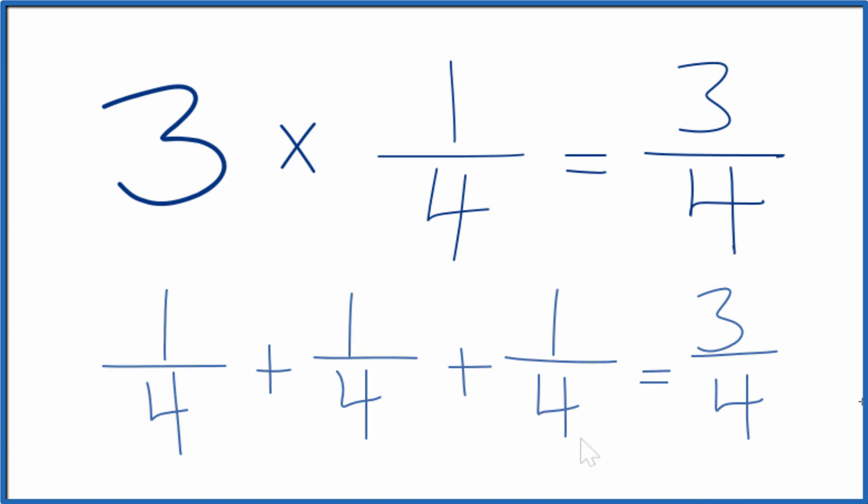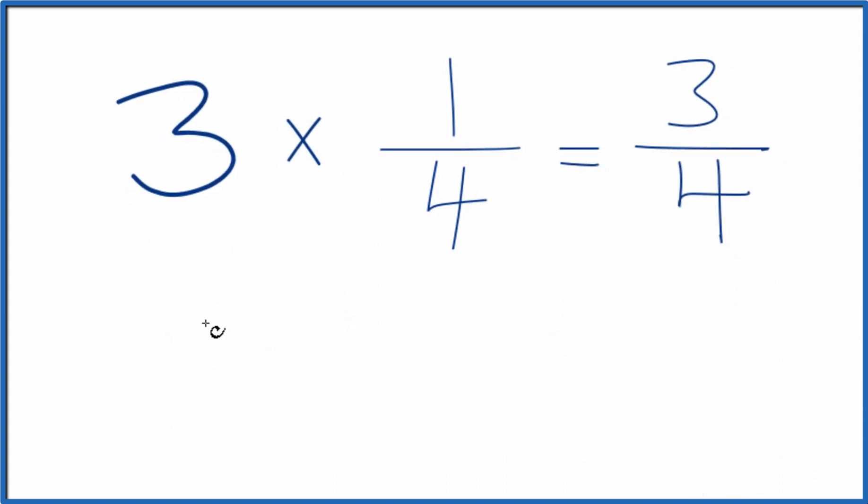Here's another way you can do that. You could treat 3 as 3 over 1. It's still 3. We're just dividing by 1. Now we have a fraction. Multiply that times 1 fourth.